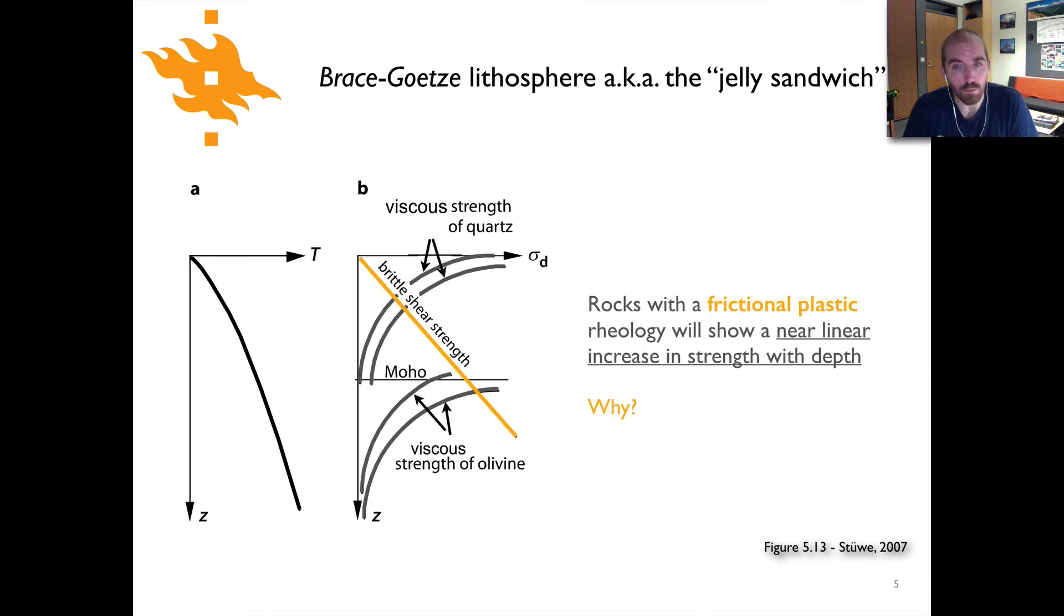We also know that rocks with a frictional plastic rheology will have a nearly linear increase in strength with depth. If we took here differential stress as a representation of rock strength and then increasing depth again we could see this orange line here that would be our brittle shear strength.